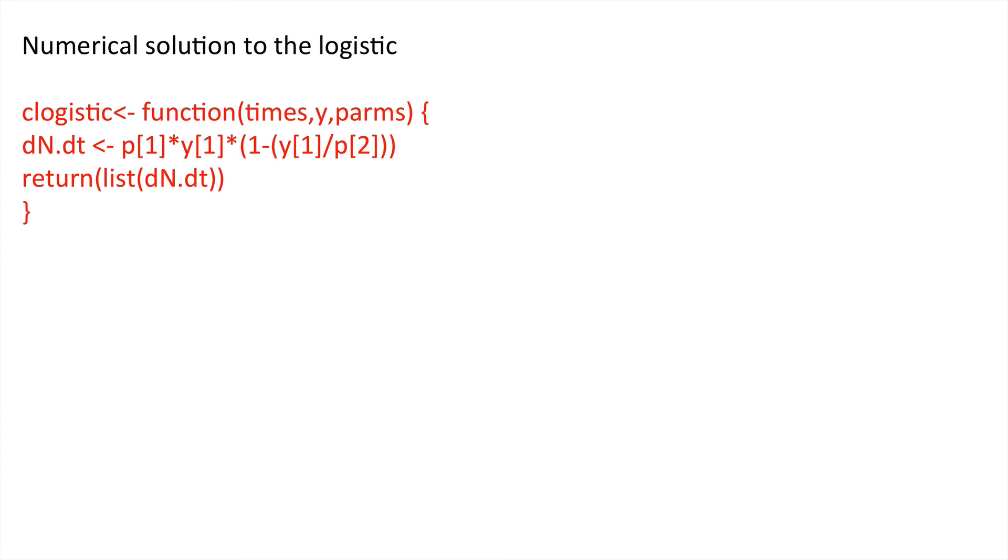There's the function defined strictly in terms of times, y and parms as the ODE solver requires. We've got dN.dt here. And notice now that we have two parameters. One standing for r and the other one standing for K.